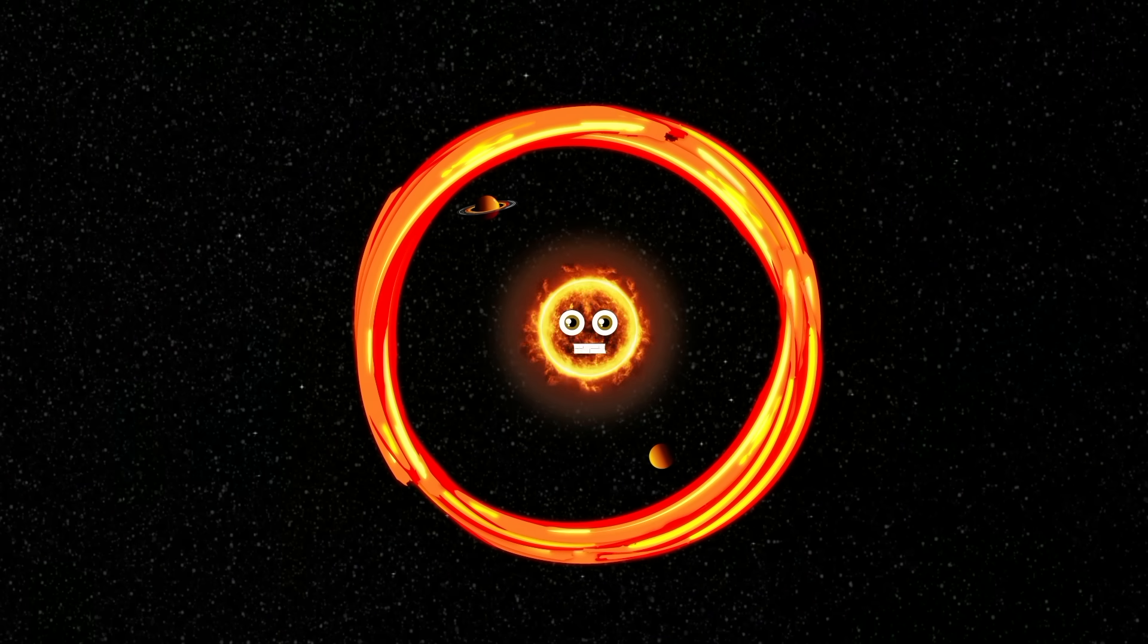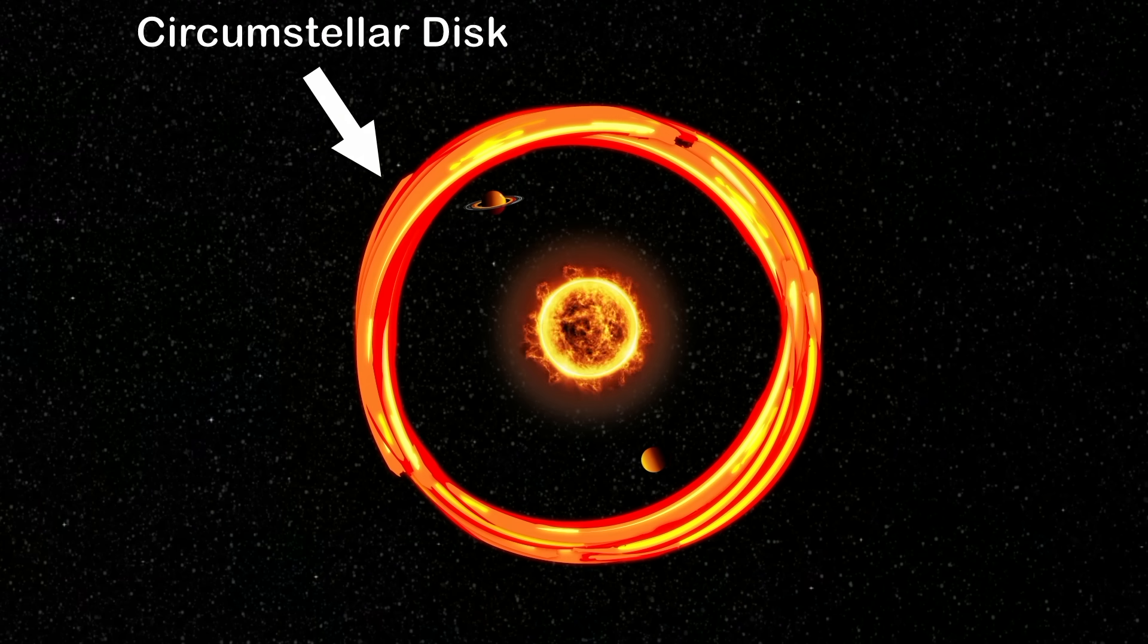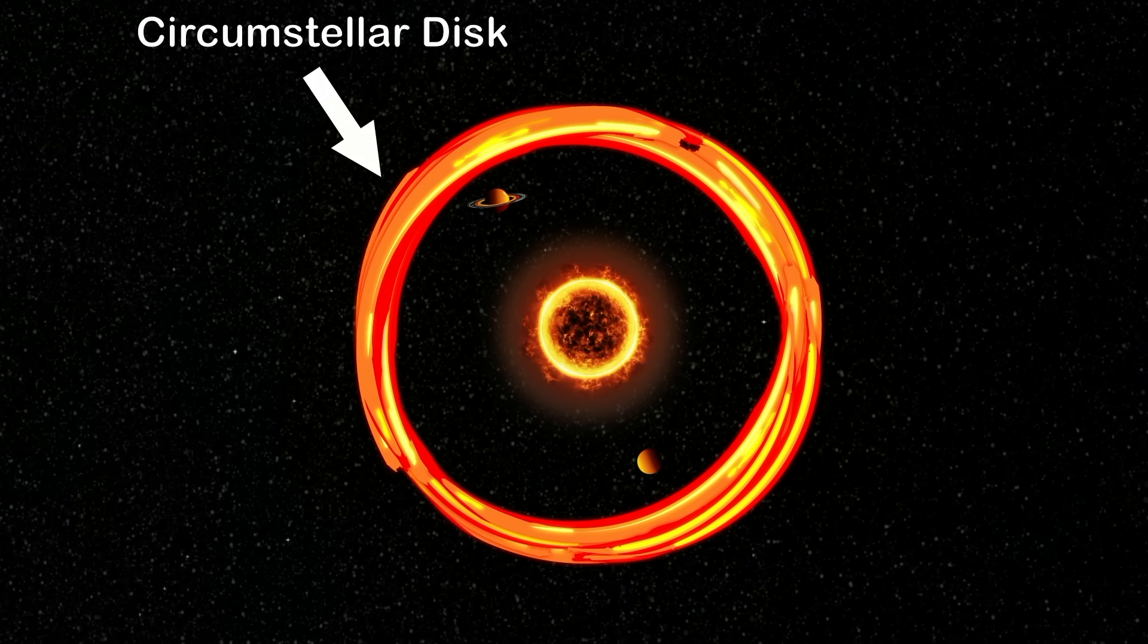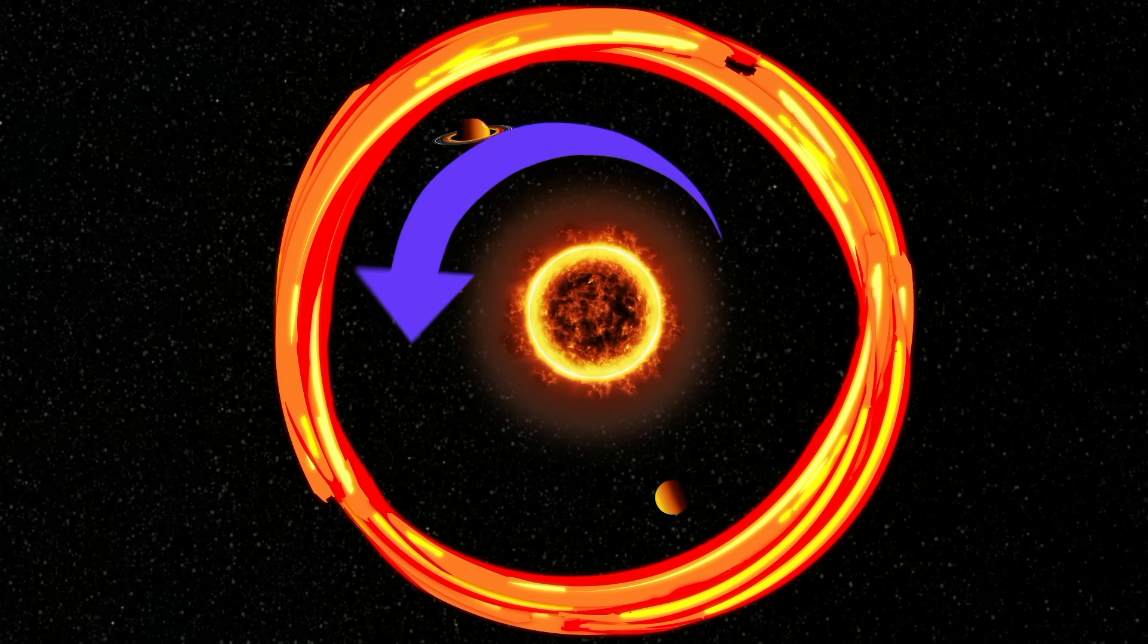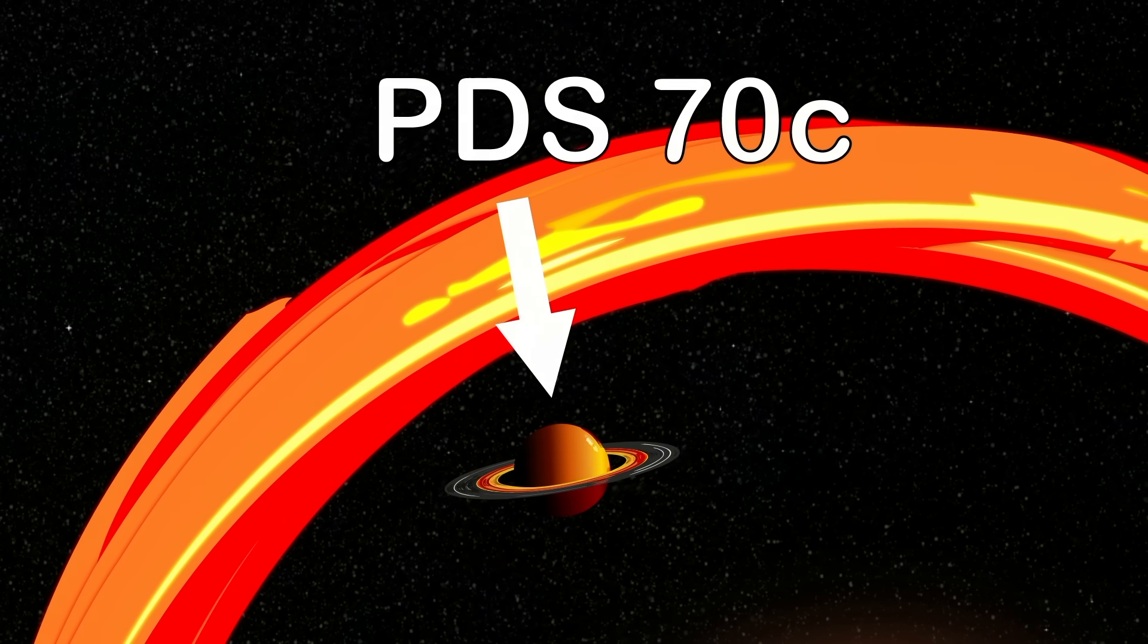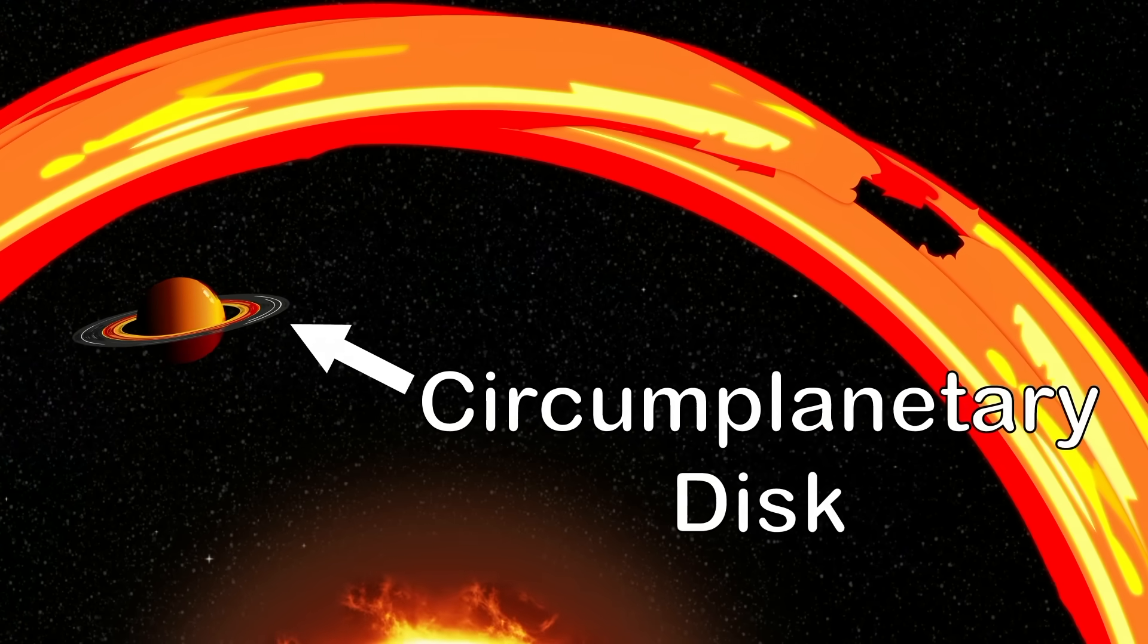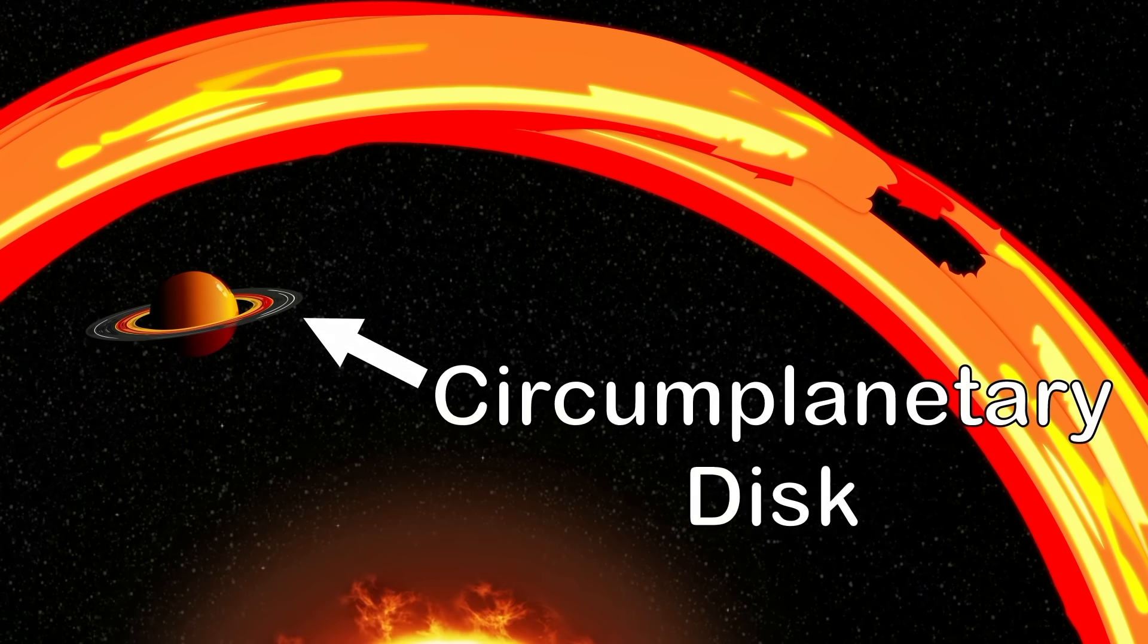My system has a circumstellar disk surrounding it with an inner cavity sculpted by the planets. PDS-70c has something surrounding it, this is what you would call a circumplanetary disk.